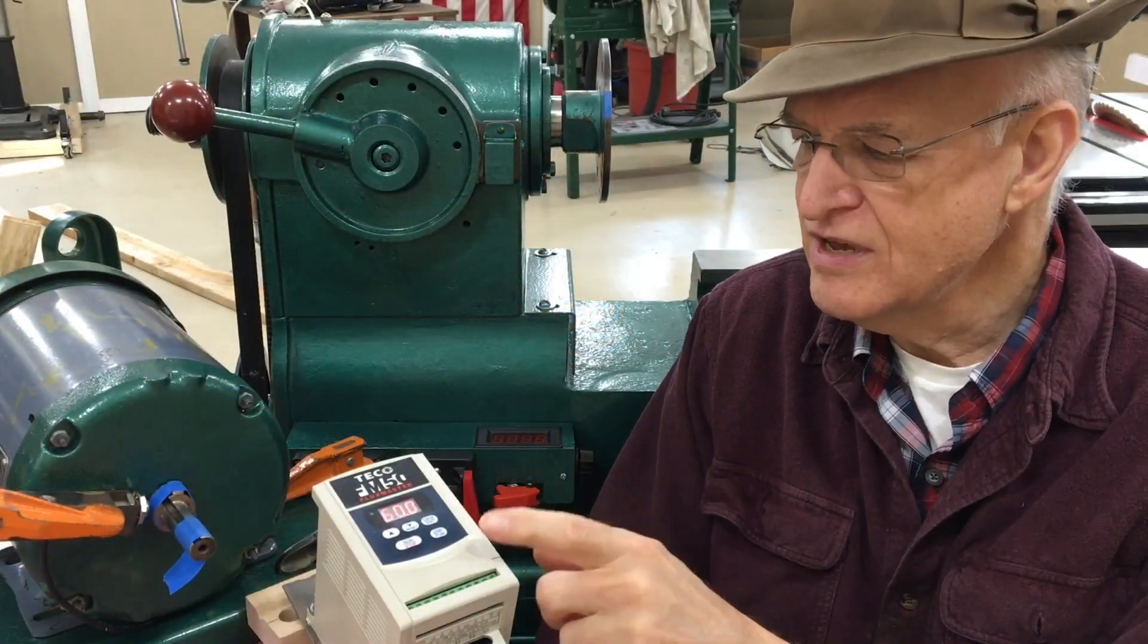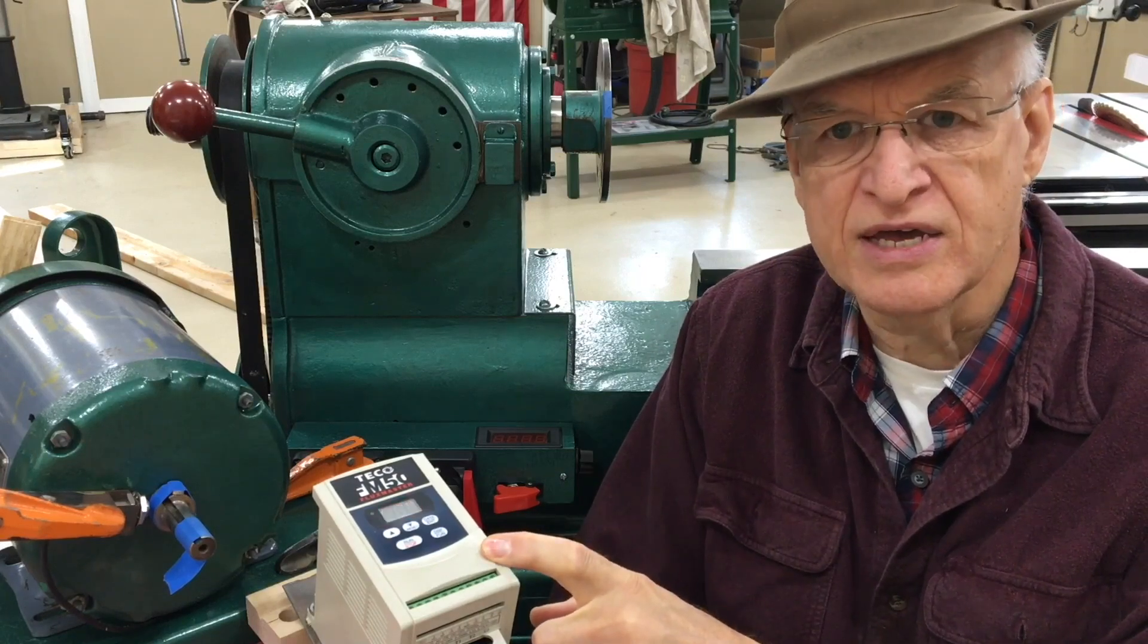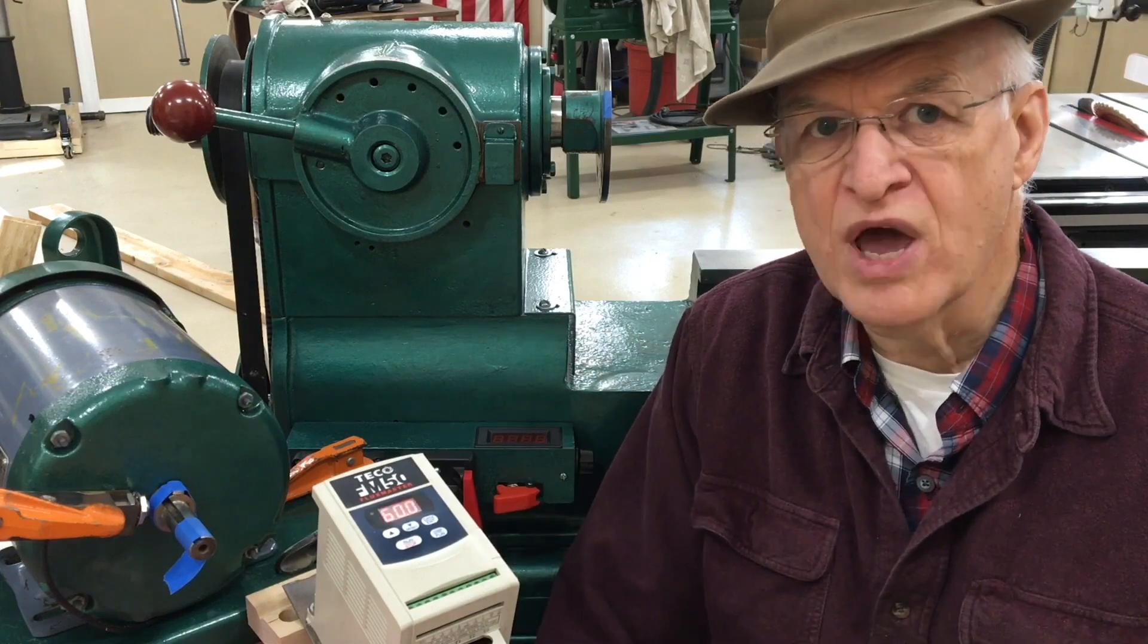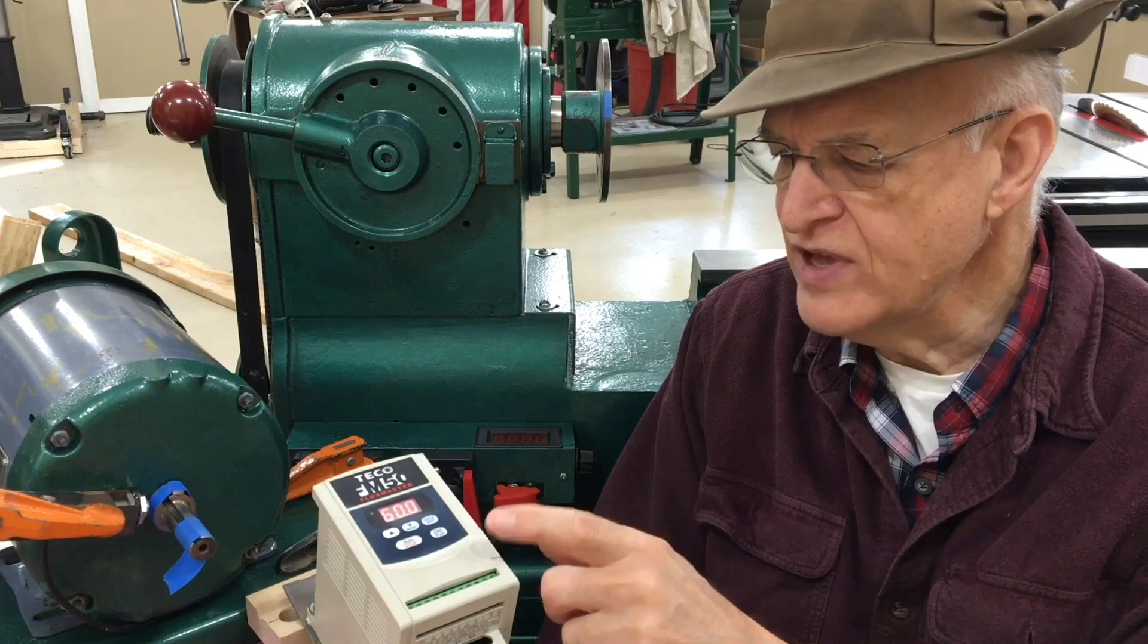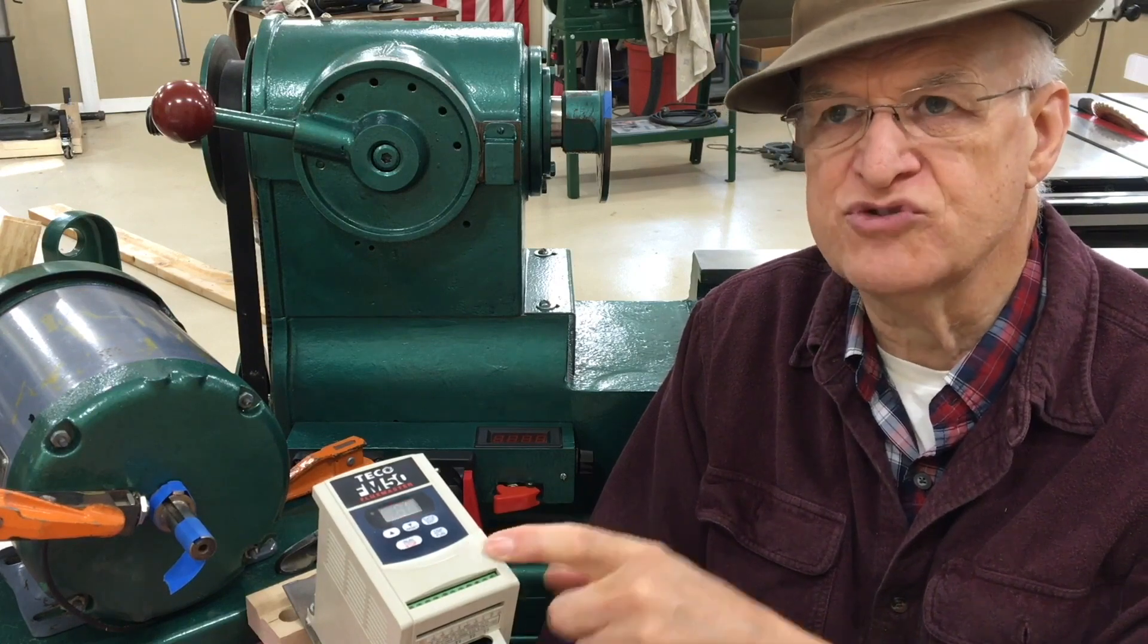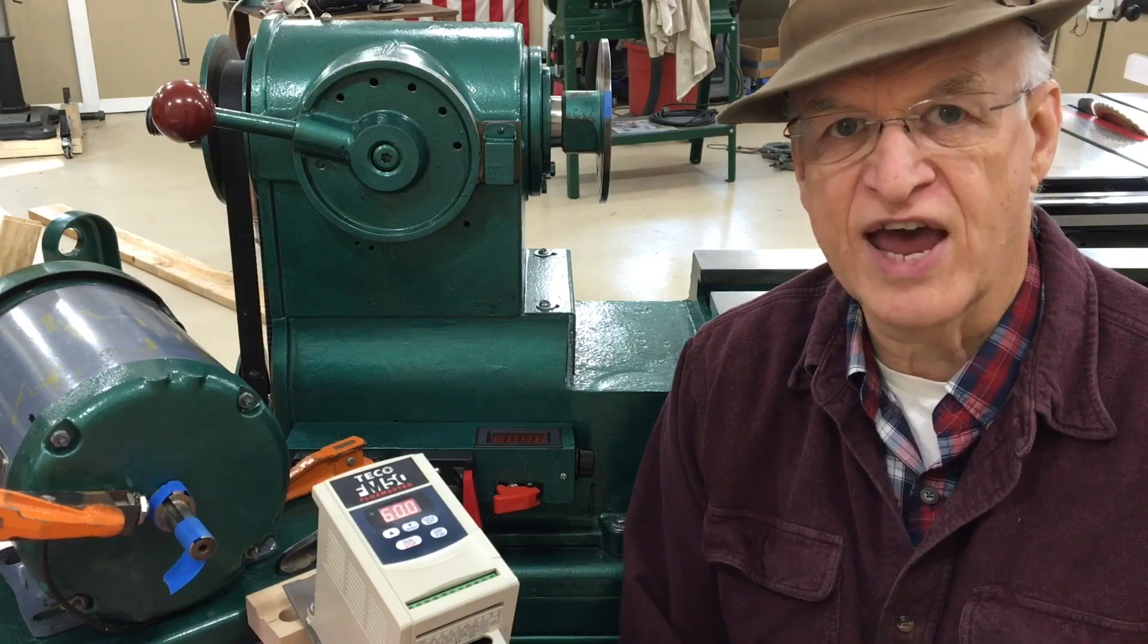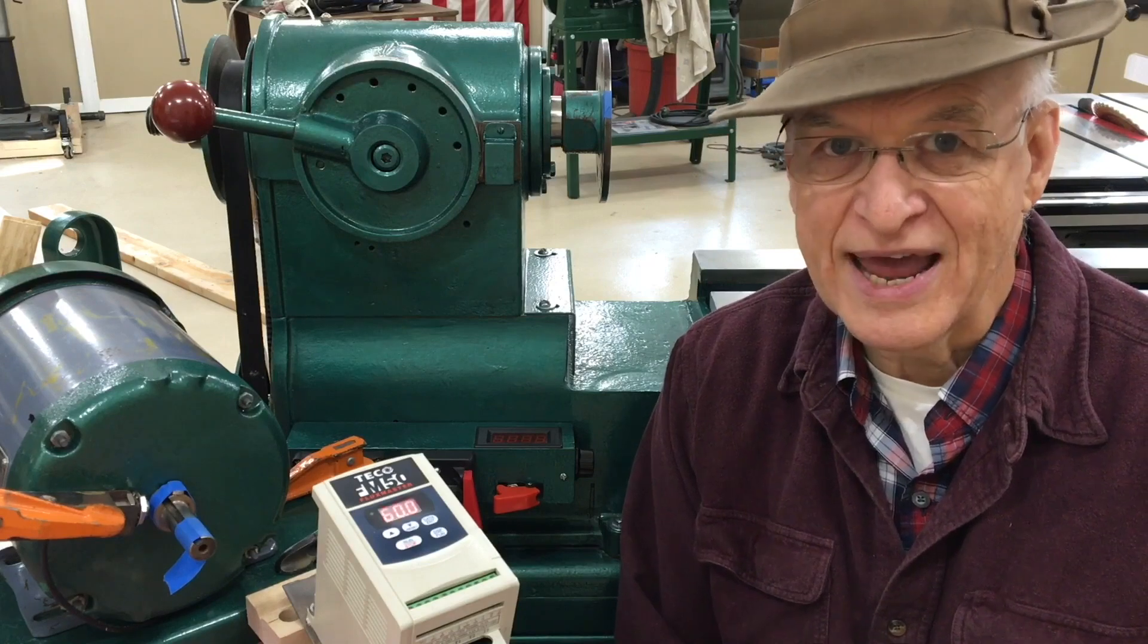This variable frequency drive can vary the frequency between zero and 200 hertz. Well, this motor is designed to run at 60 hertz, 1800 RPMs. If we were to run this at 200 hertz, it would drive the motor at nearly 6000 RPMs three and a half times faster than it's designed to go. And I don't know if I want to see what might happen.